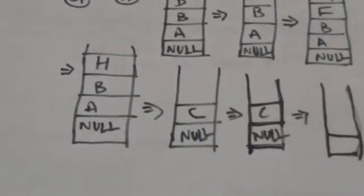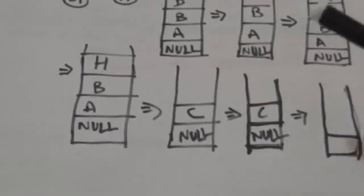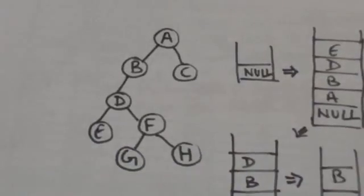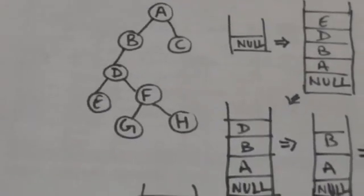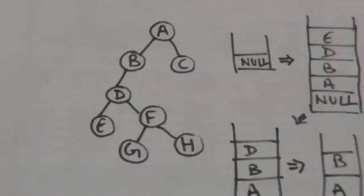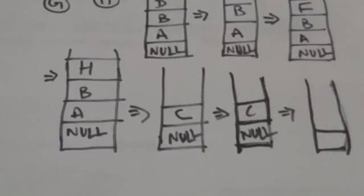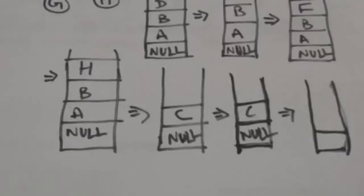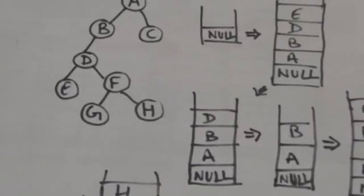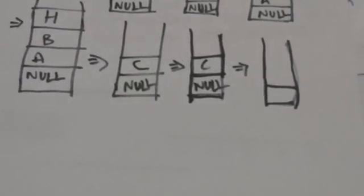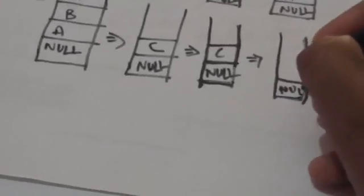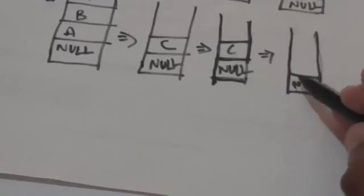So we will push node C into the stack. Node C doesn't have any left child, so there is nothing to push into the stack. Now node C is the top element of the stack, so we will pop node C and process it. Node C doesn't have any right child. So now null will be popped from the stack. Since the popped element is null, we will stop there. Thank you very much.